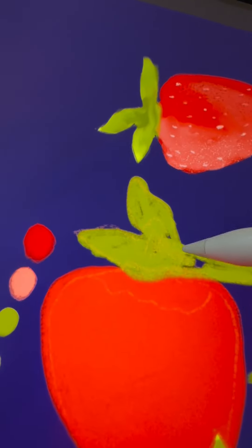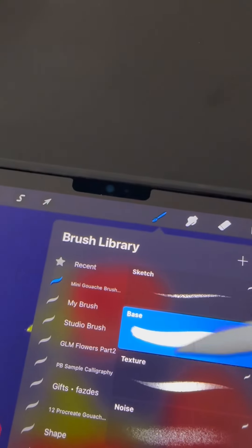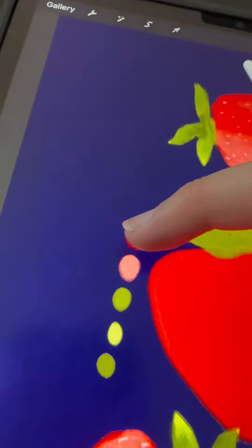For the next step, you're going to turn your strawberry base layer into an alpha-lock layer. Use my texture brush to create some texture on top of the strawberry.